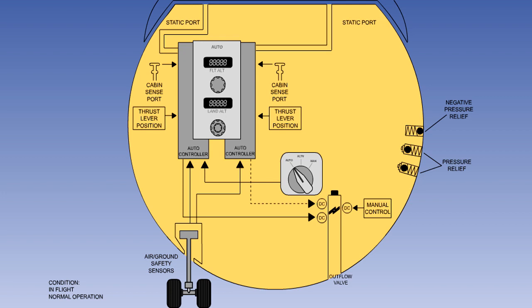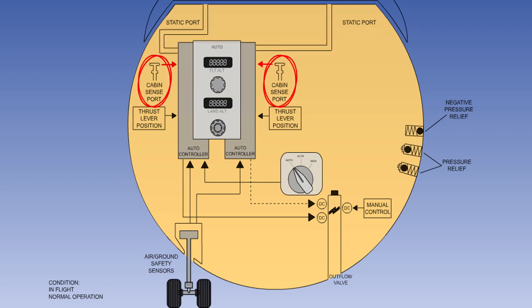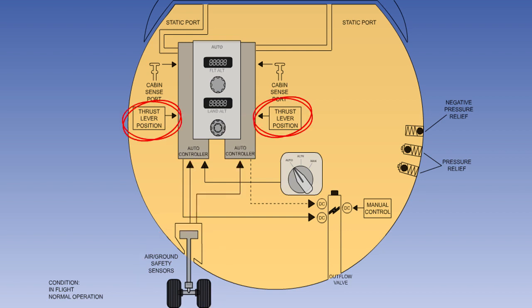This schematic diagram shows the arrangement of the pressurization control system of a modern passenger transport aircraft. The automatic controllers are duplicated and have inputs from the aircraft static pressure sensing system, the cabin pressure sensors, and the air-ground logic system. If pre-pressurization — that is, pressurization on the ground prior to takeoff — is part of the schedule, then inputs are also required from the thrust lever positions. One controller is operating and the other is on standby; the roles are automatically reversed after each landing. In the event of a failure, the standby controller will automatically take over control. The controllers are normally located away from the flight deck in an electrical service centre.